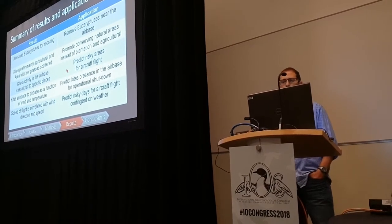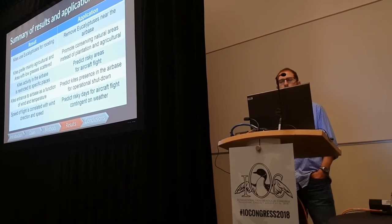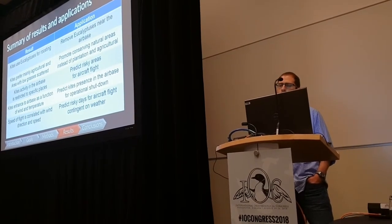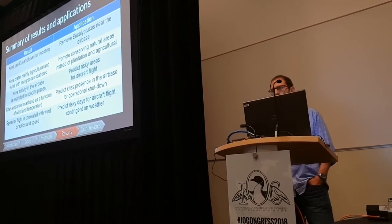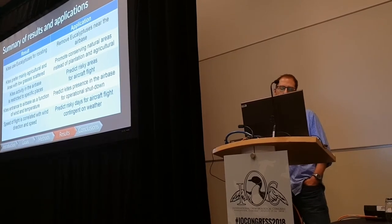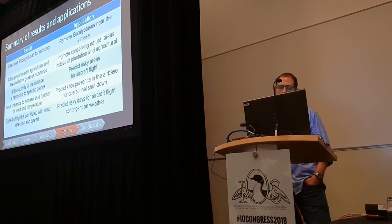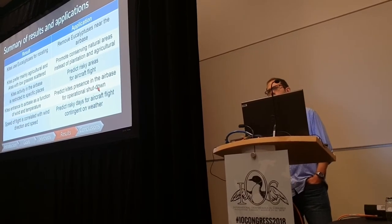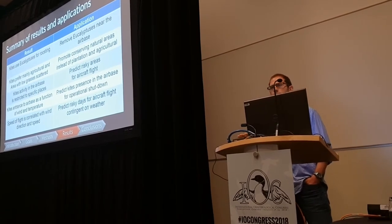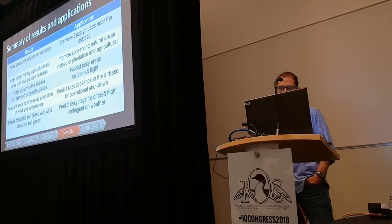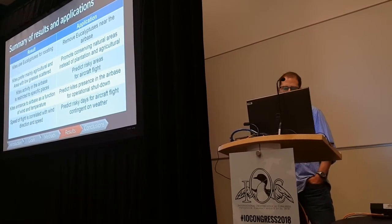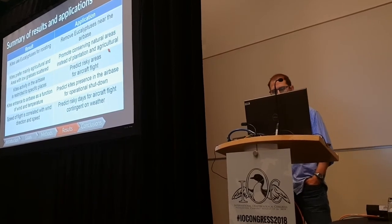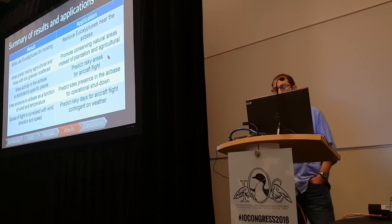To summarize the results and their applications: we can recommend removing eucalyptus trees from the airbase and promoting natural areas instead of plantation and agricultural areas. We can now predict risky times and locations using a few weather factors, and predict kite presence in the airbase. Currently when kites enter the airbase, all activity stops — we can now give decision-makers tools to predict and decide when and how to act, and to predict risky days for aircraft contingent on weather.